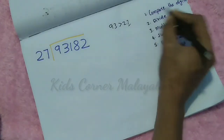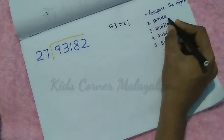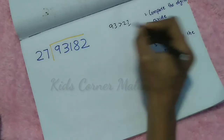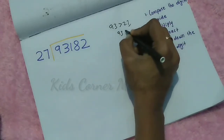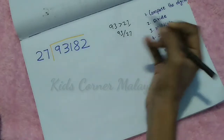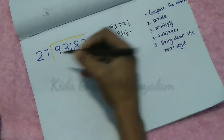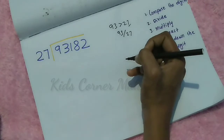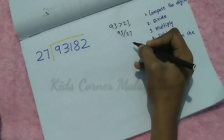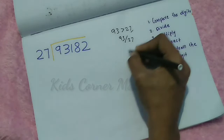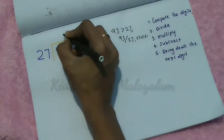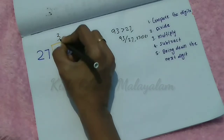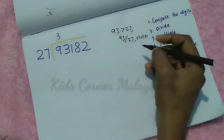The second step is divide. We divide 93 by 27. How many times does 27 go into 93? Three times. So our first quotient digit is 3.